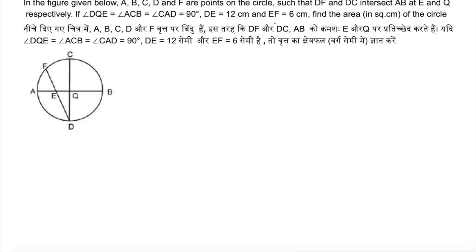The question seems to be one of the toughest, but it is not. I used just 2 or 3 concepts within the question. AB and CD are the chords, and DF and DC have some points. Now what is given? Angle DQE is 90 degrees, and angle CAD is also 90 degrees. A chord subtending a 90-degree angle means CD is a diameter — if any chord has any angle of 90 degrees, it is a diameter. ACB is 90 degrees, which means AB is also a diameter.